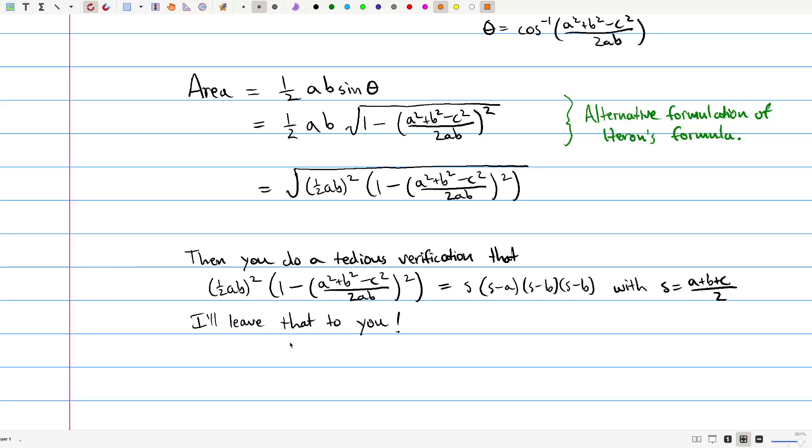Anyway, we've seen Heron's formula and how you can get it from some of the formulas from the previous lectures. And it's something that you can use if you have a triangle where you know the lengths of all the sides and you don't want to do any trigonometry. So anyway, I'll see you next time. Bye.